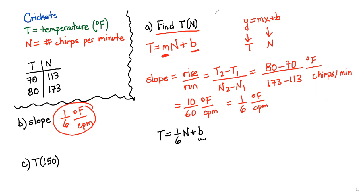Okay. So we're going to go ahead and take our first point and substitute N. So T is 113, that's equal to 1/6 of N. Oh, I plugged it in backwards. Let's fix that real quick. We don't want to plug it in backwards. So T is 70, and N is the 113. And plus B.